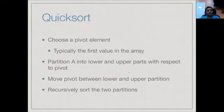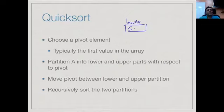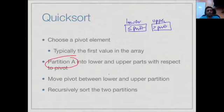So this is Quicksort. Choose a pivot element — for example, the very first value in the array. Partition the array into the lower part (those less than the pivot) and the upper part (those greater than the pivot). The crucial step is this partitioning, which we will see how to do. Then move the pivot to its correct place in the center. Recursively sort the left part and the right part, and we are done because nothing needs to move across the boundary.